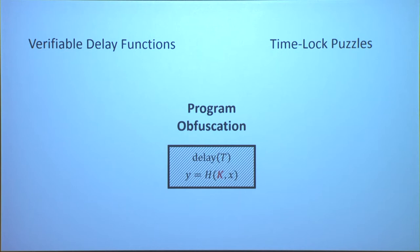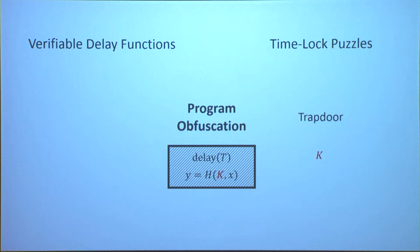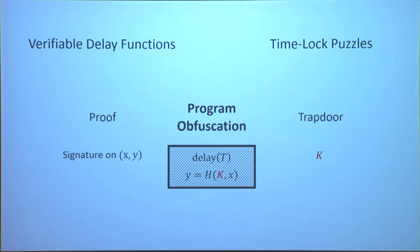Now our last example: we obfuscate a program that delays and then evaluates a pseudorandom function on the input. Because we're already using a heavy hammer like program obfuscation, getting time-lock puzzles and VDFs is straightforward. For time-lock puzzles, the trapdoor is just k, the key of the pseudorandom function — if you have k, you can compute this function yourself without going through the obfuscated program and without any delay. For VDFs, the idea is to use a digital signature: we change the obfuscated program to also contain a secret signing key, and the program outputs, in addition to y, a signature on the pair x and y. The proof is just the signature, and to verify the output, you just verify the signature. Because no one else except this obfuscated program can produce valid signatures, no one can prove the wrong output.